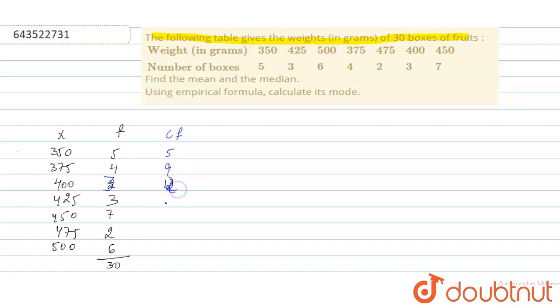Cumulative frequency is 5, 9, 11, 400 is 3, so 12, 12 plus 3 is 15, 15 plus 7 is 22, 24, and 30.